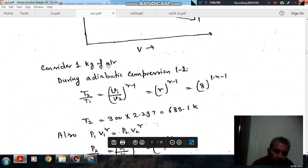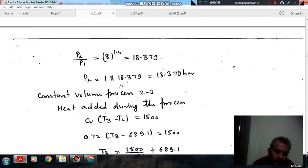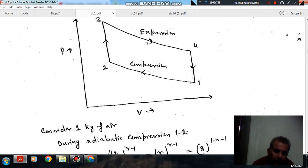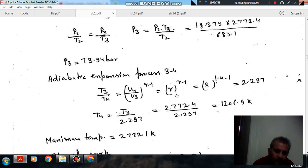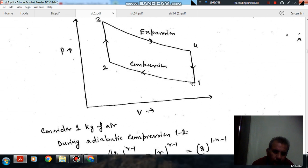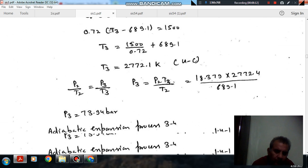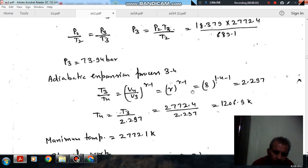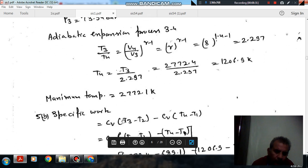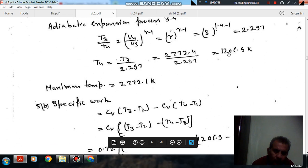So next process in this is again an adiabatic process which is the expansion process. So during this expansion process we have T3 by T4 is equal to V4 by V3 to the power gamma minus 1. And V4 by V3, as V1 equals V4 and V2 equals V3, so V4 by V3 will be 8. So you can find out T4 also. So T4 is 1206.92.